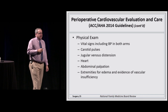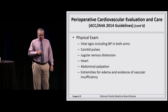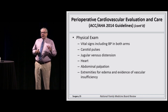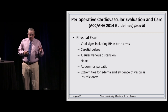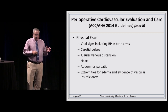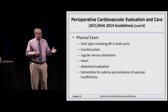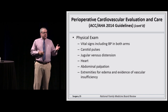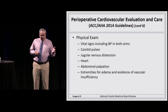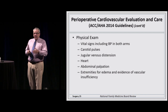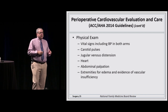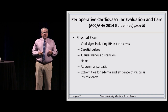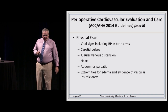The physical exam is pretty straightforward. Vital signs — and the cardiologists recommend taking blood pressure in both arms. Check the carotid pulses, look for jugular venous distension as signs of undiagnosed congestive heart failure, examine the heart, palpate the abdomen, and look for edema and presence of peripheral vascular disease.